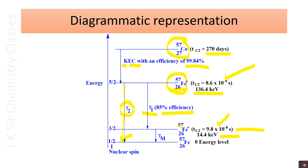The excited Fe-57 nucleus with energy 14.4 keV emits another gamma radiation and comes to the ground state. On the left-hand side of the figure, nuclear spins are represented. The excited nucleus with energy 136.4 keV has nuclear spin I = 5/2. The excited Fe-57 nucleus with energy 14.4 keV has nuclear spin I = 3/2. The ground state Fe-57 nucleus has nuclear spin I = 1/2.